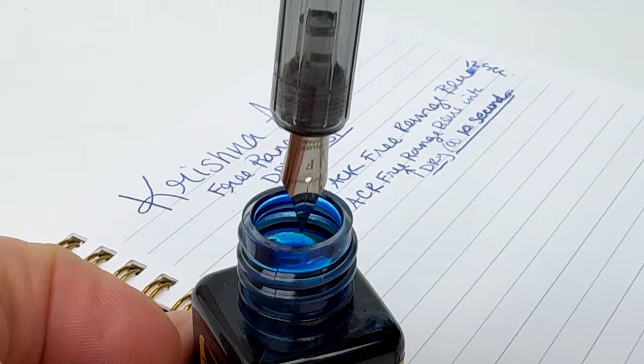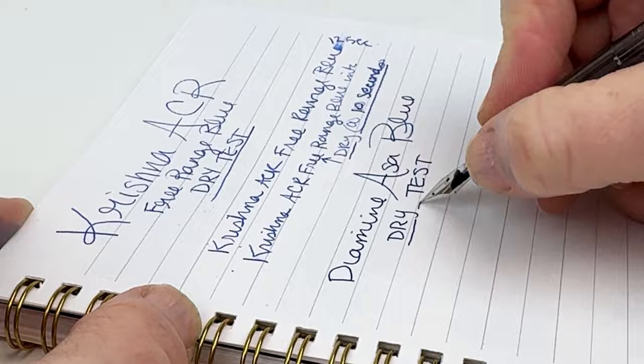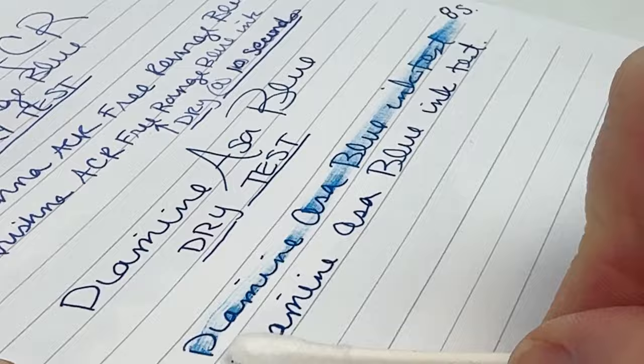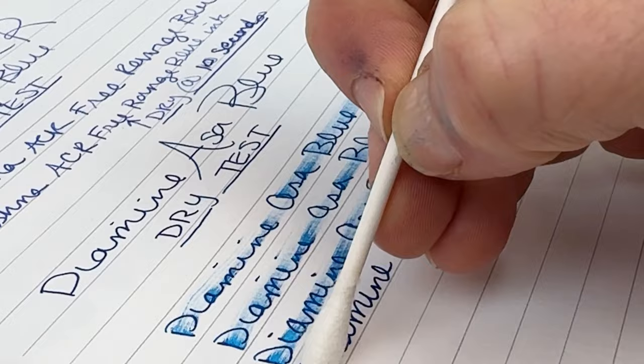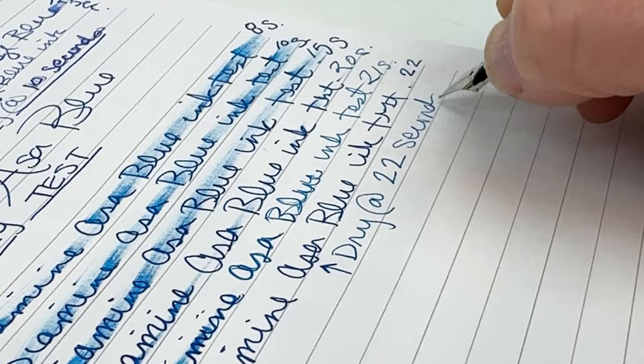We're going to do that for each of the inks, and we're going to whip through it here so you don't have to watch us do that. We've done the same type of dry test for each of the different inks. Krishna's ACR Free Range Blue and then Diamine Asa Blue. The Krishna dried at 10 seconds, really faster than I expected. The Diamine Asa Blue came in at 22 seconds.